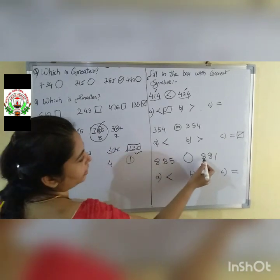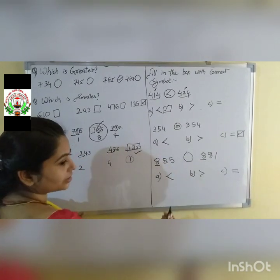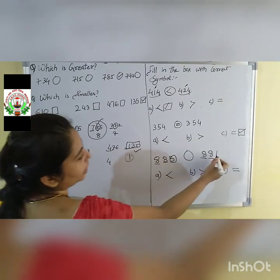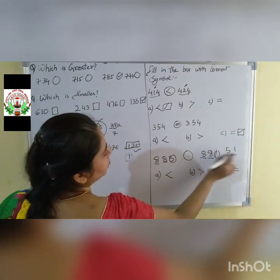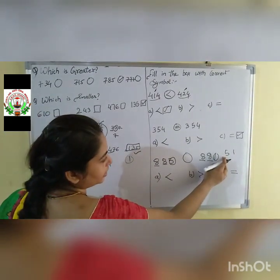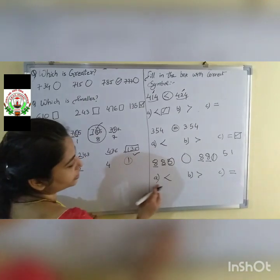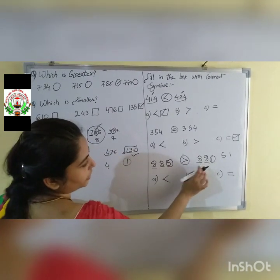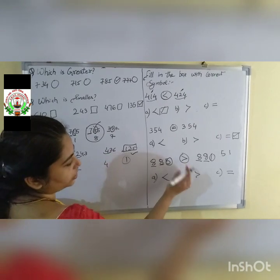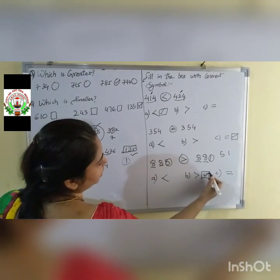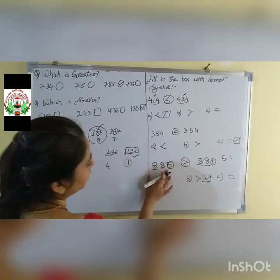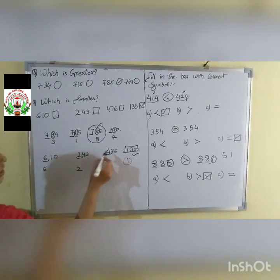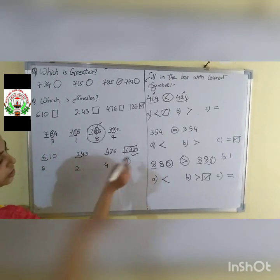885 and 881: the first two digits 88 are equal in both. The third digit is 5 vs 1. 5 is greater, so 885 is greater than 881. We put the greater than symbol — option B is correct. In this way, compare the first digit of every number, then the second digit, then the third digit to determine greatest and smallest. Clear this concept, children.